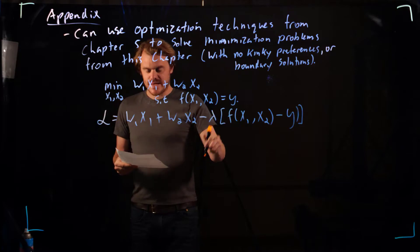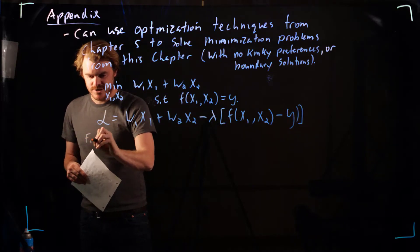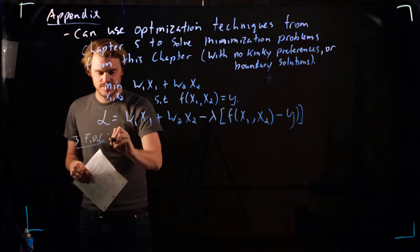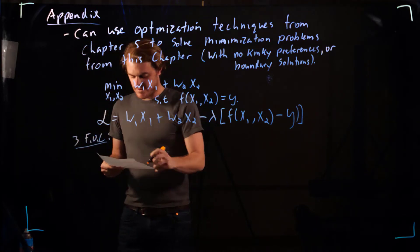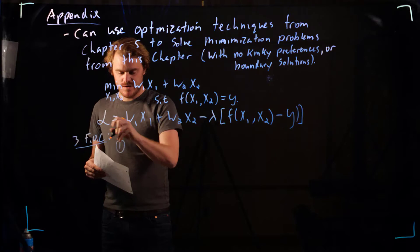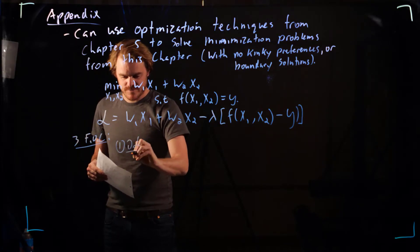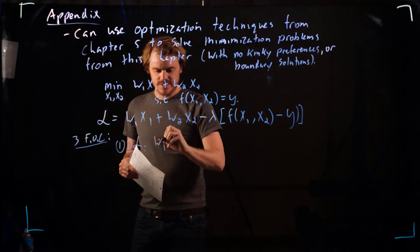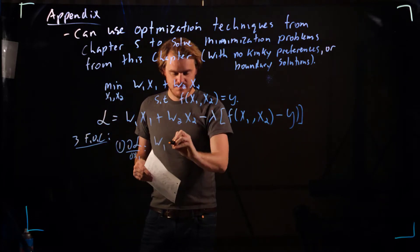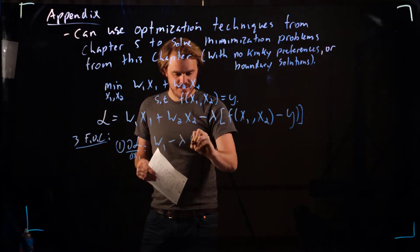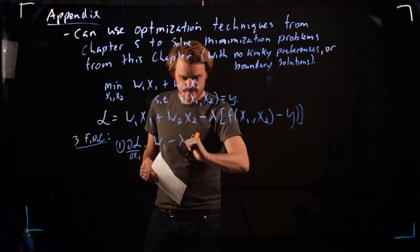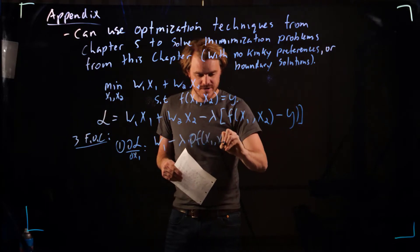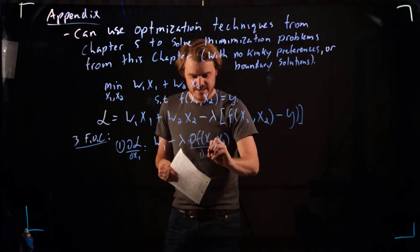And now we have our first order conditions. There's three first order conditions. Take the derivative of Lagrangian with respect to x1, which is just equal to w1 minus lambda times the derivative of our production function, the partial derivative of our production function with respect to x1.